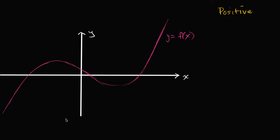Positive means that the value of the function is greater than zero. It means that the function is sitting above the x-axis. So it's sitting above the x-axis in this place right over here that I am highlighting in yellow, and it is also sitting above the x-axis over here.